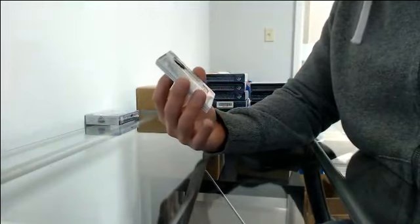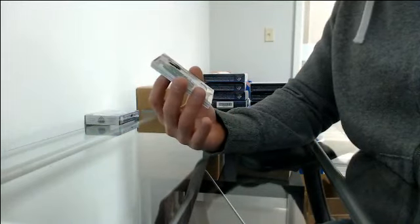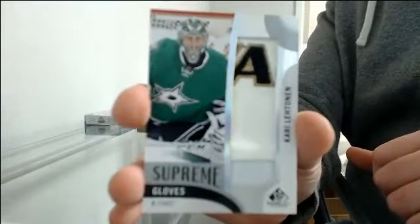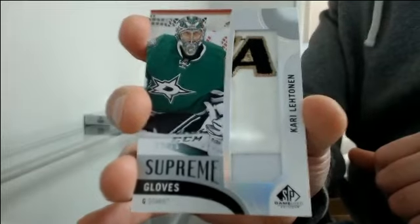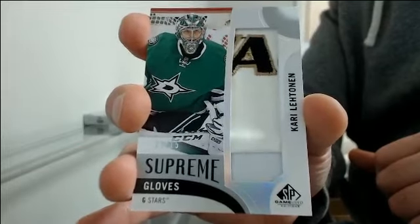Supreme Gloves. That's nice. 11 to 15 for Dallas, Kari Lehtonen. Nice glove piece in there. Love the Supremes. Got an auto for Calgary, Sean Monahan.